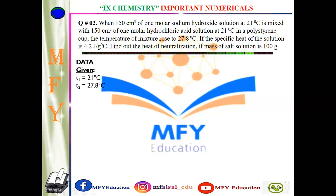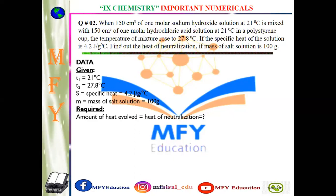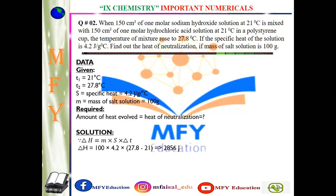If the specific heat of the solution is 4.2 J/g°C, find out the heat of neutralization. Mass of salt solution is 100 grams. Formula: heat of neutralization = m × s × ΔT। Mass = 100, specific heat = 4.2, ΔT = 27.8 − 21 = 6.8। बहुत आसान calculation — answer: 2856 Joules। यह heat of neutralization आ गई हमारे पास।